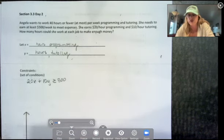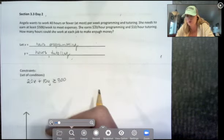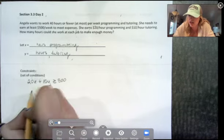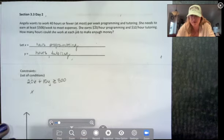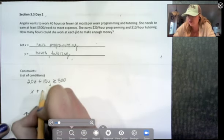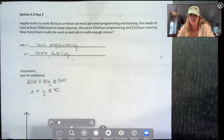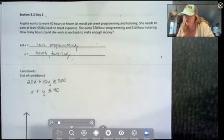Now we need a constraint involving the hours. So here's our one involving the money, now we need one involving the hours. So she does not want to work more than 40 hours, so her number of hours programming, which is just x, plus her number of hours tutoring must be less than or equal to 40. So these are her constraints, which are our inequalities.